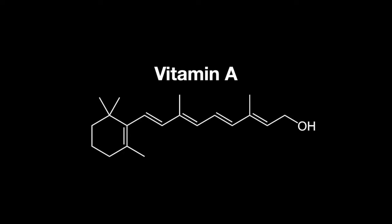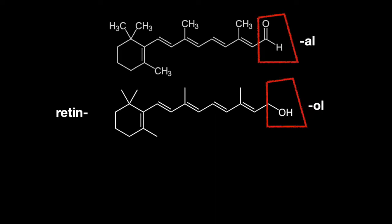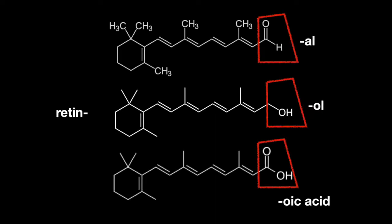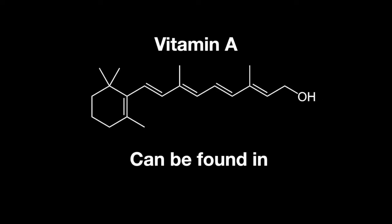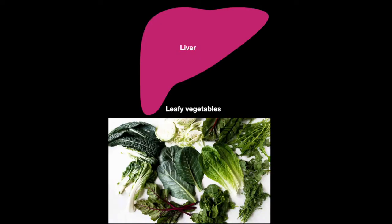Vitamin A can be found in any of the forms: retinol, retinal, or retinoic acid. Vitamin A can be found in the liver and leafy vegetables.